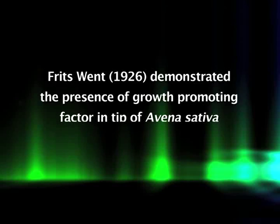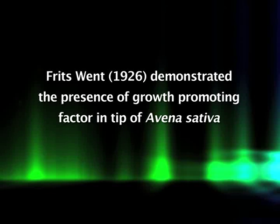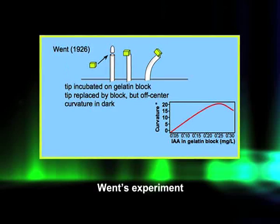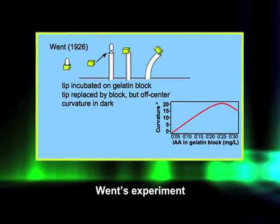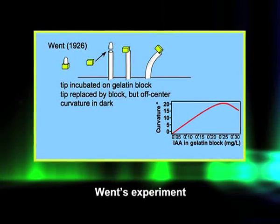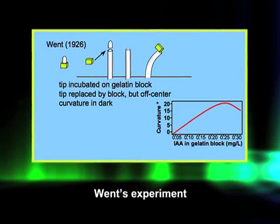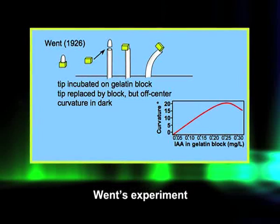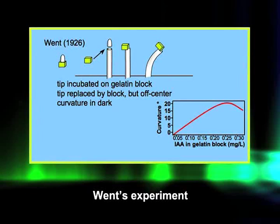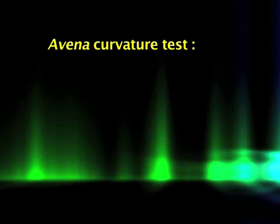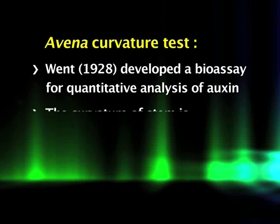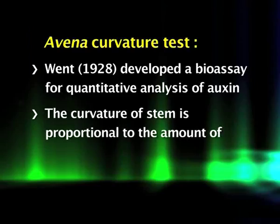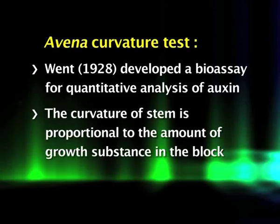Finally, in 1926, Fritz Went demonstrated the presence of a growth-promoting factor in the tip of oat (Avena sativa). He placed excised coleoptyle tips on gelatin blocks; the growth-promoting factor diffused out into the gelatin blocks. When these blocks were placed asymmetrically on decapitated Avena stems, the stems could bend in the absence of unilateral light. Went also developed a bioassay — the Avena curvature test — in which the curvature of the stem was proportional to the amount of growth substance in the block.